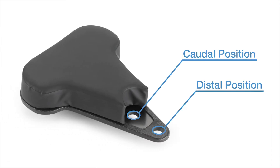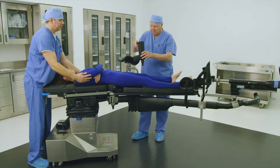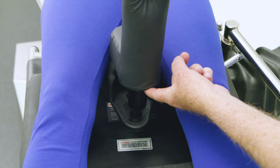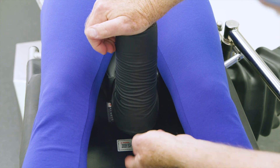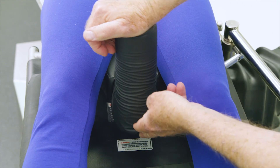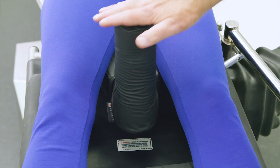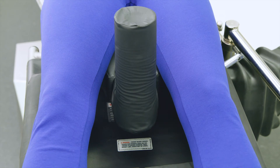There are two positions in the sacral rest to facilitate positioning requirements for a range of patients and to improve imaging area with unobstructed views. Most patients require the post inserted in the distal position. Taller patients typically require the post inserted in the caudal position. Place the desired perineal post and pad into the appropriate hole on the sacral rest and ensure the post is fully seated. Failure to ensure correct placement could result in patient injury during active traction.